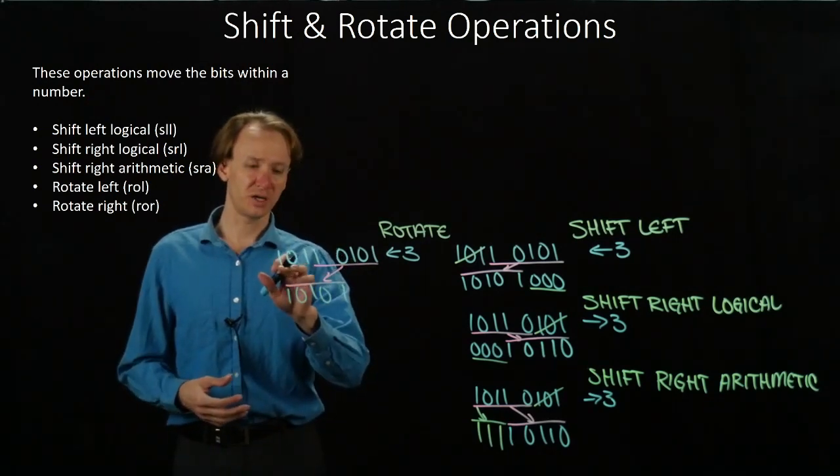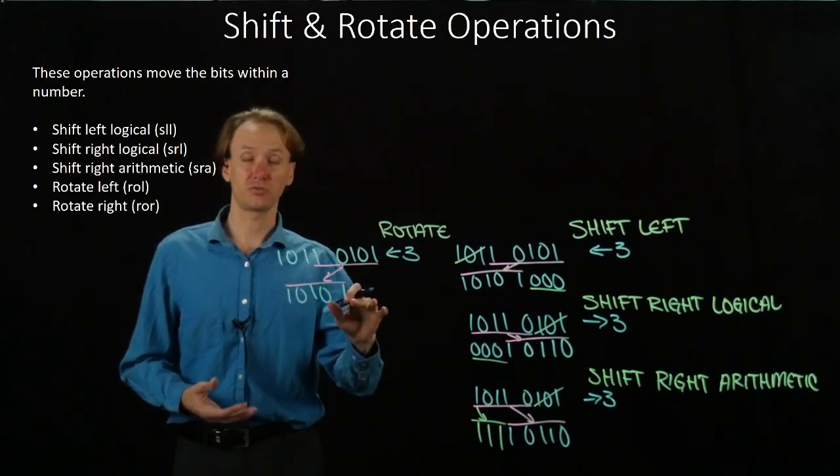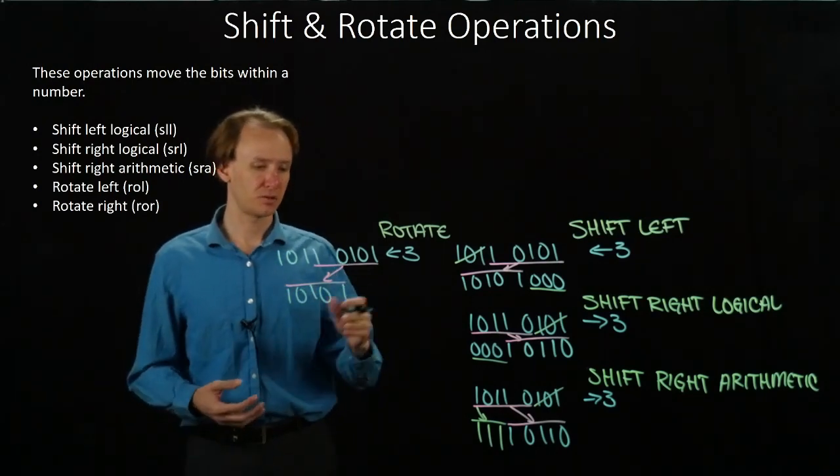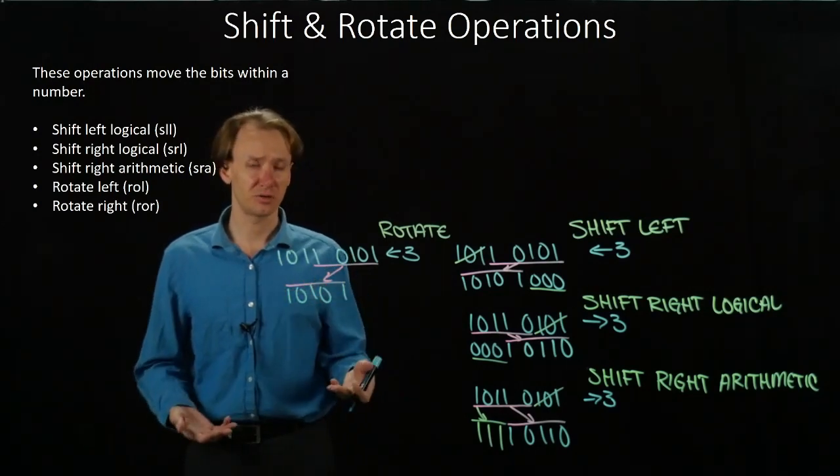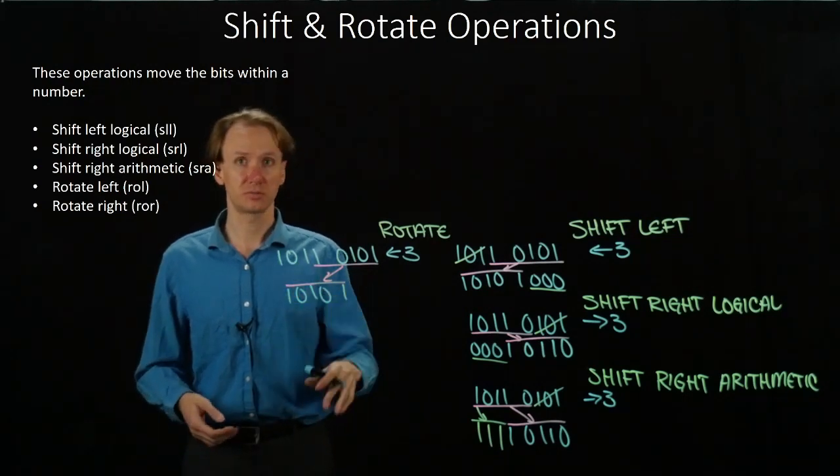But now, these three bits will get moved in on the right-hand side. That way, I'm not just shifting in zeros. I'm now shifting in something that's maybe interesting.